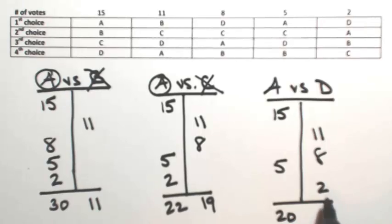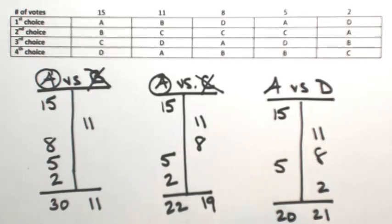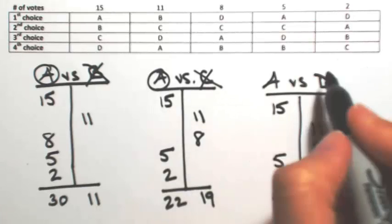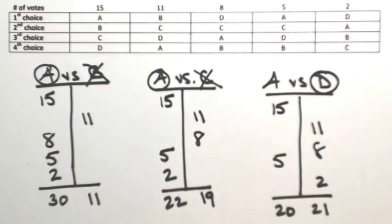So A has 20, and D has 21. So this means that D is the winner of that competition. So A is not the Condorcet winner.